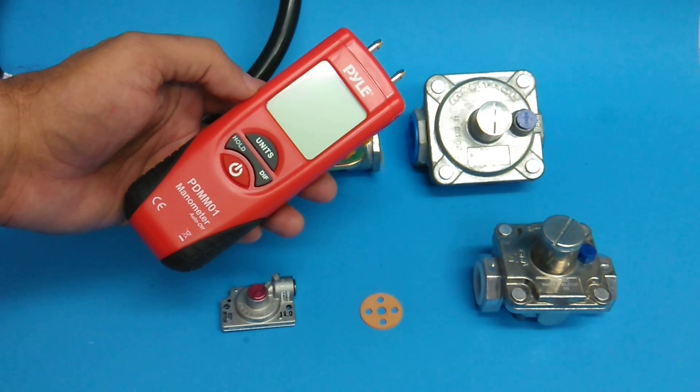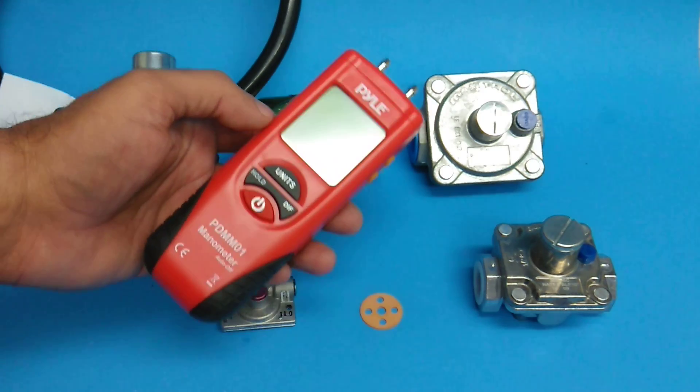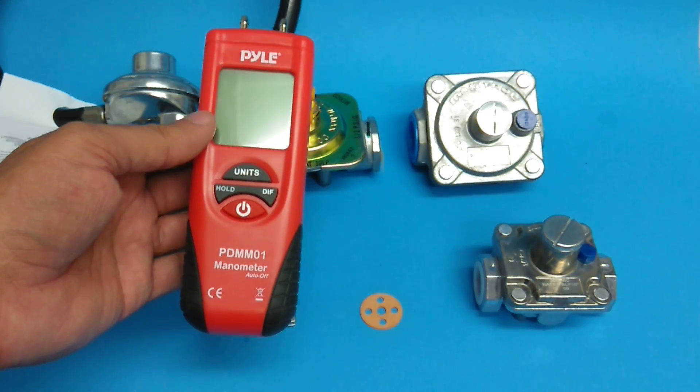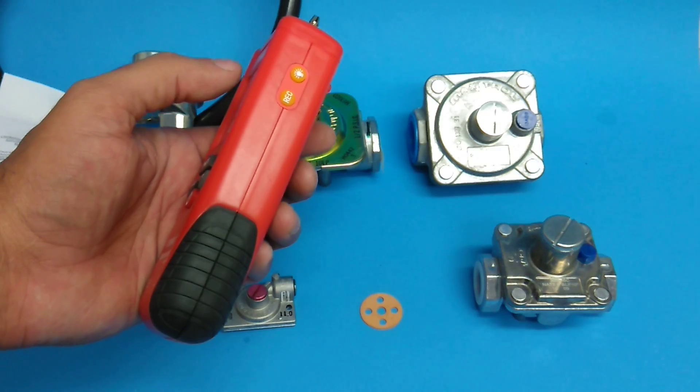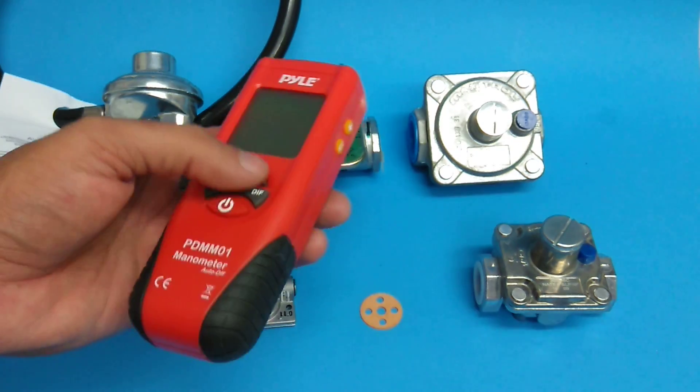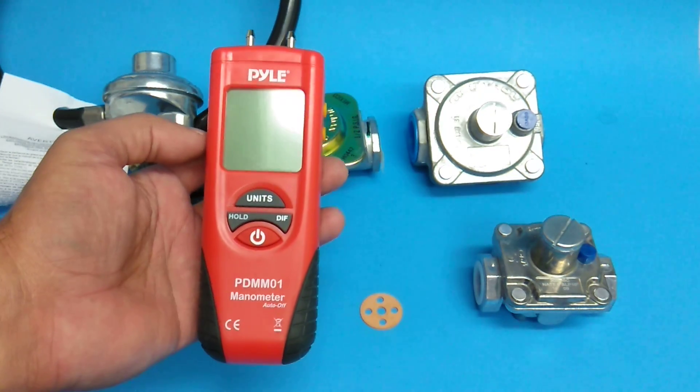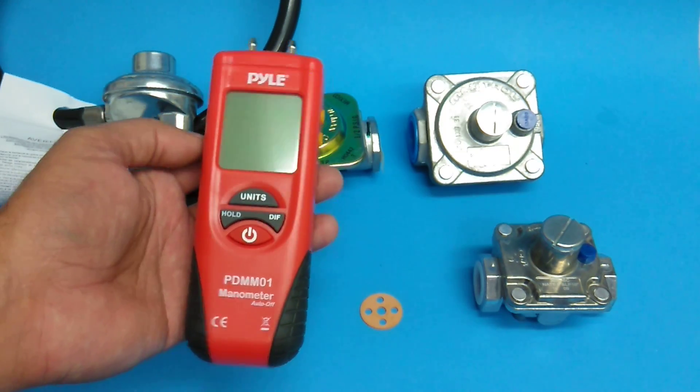This one reads in 10 different scales. So it'll read water column. It'll read, there's just a bunch of different standards that are used for gas settings. And this one here has 10 different scales on it. It can be flipped back and forth. It's got little buttons on the side. You can record scenarios of spikes and drops and stuff like that. A pretty technical tool that's not really going to be necessary for somebody just doing a gas conversion in their own kitchen.